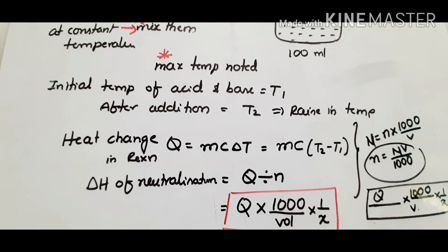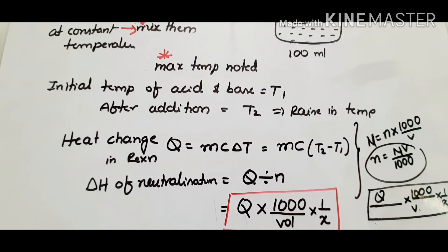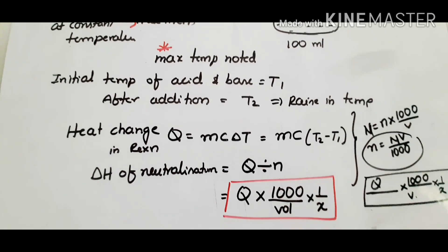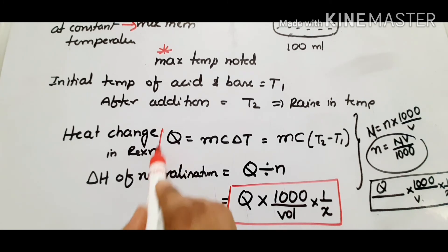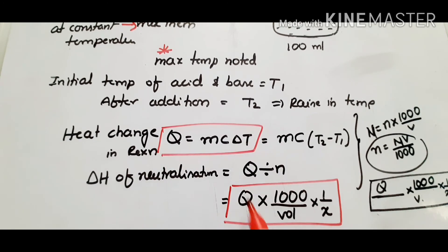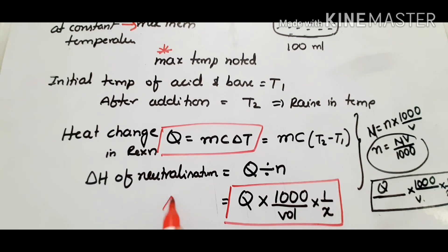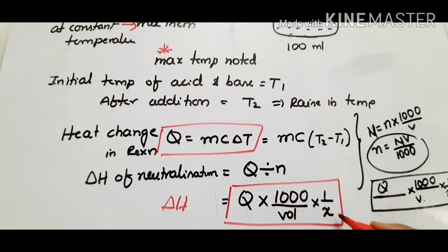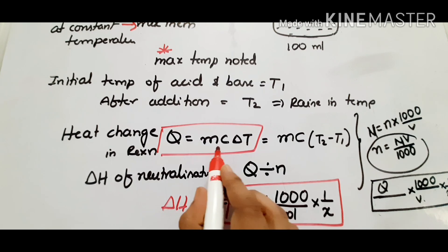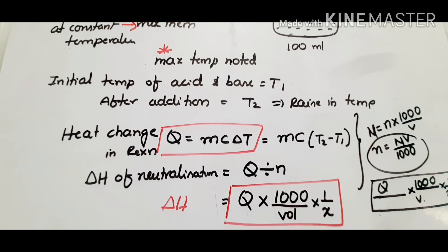x is the normality of the solution — acid or base. These are the two important formulas: q equals m times c times delta T, and delta H of neutralization equals q times 1000 divided by volume times x. Here x is the normality of the solution and volume is the volume of the solution taken. Substitute the calculated q and delta T values into this formula.